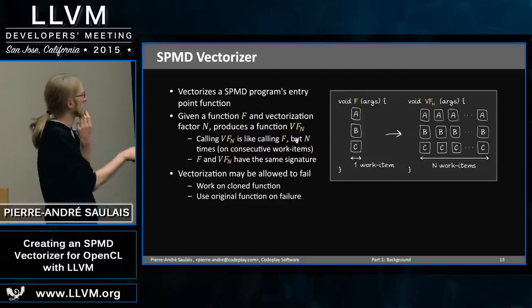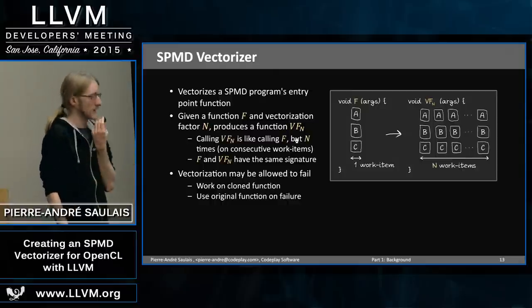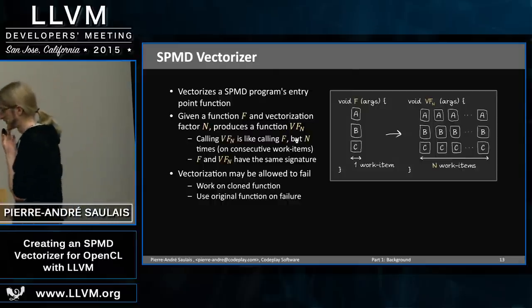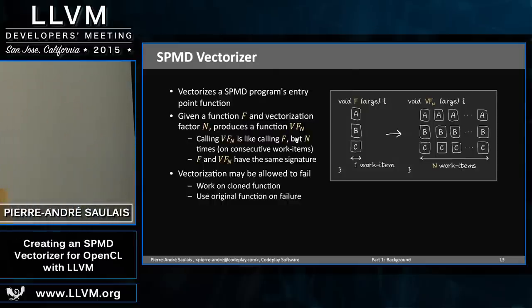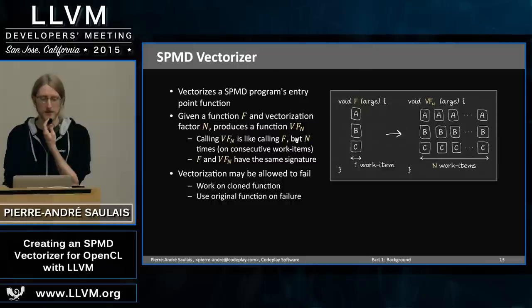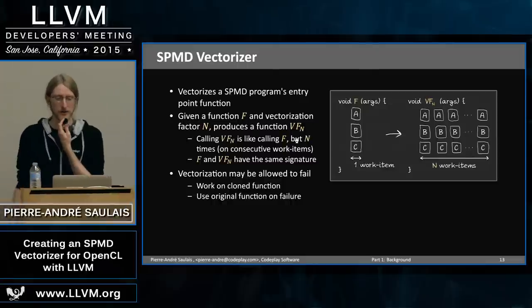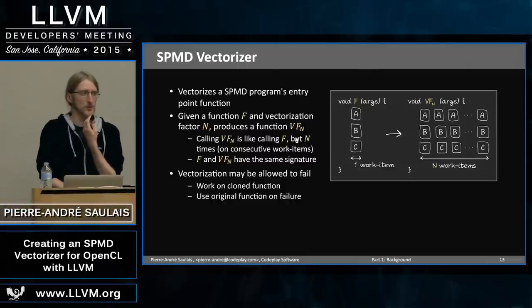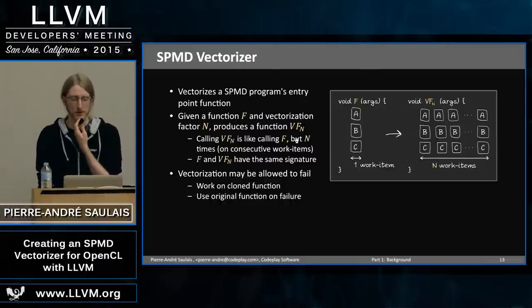If the vectorizer encounters a pattern it doesn't understand, it will fail, and you can simply fall back to the scalar function.